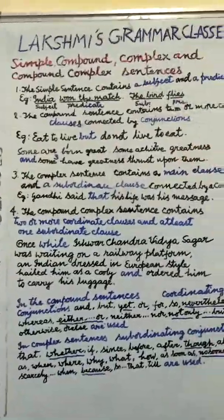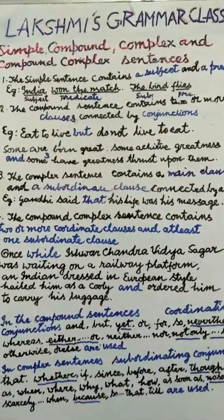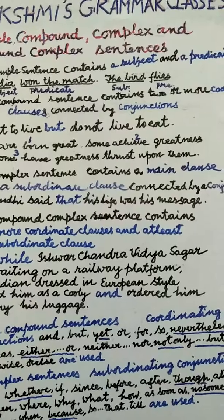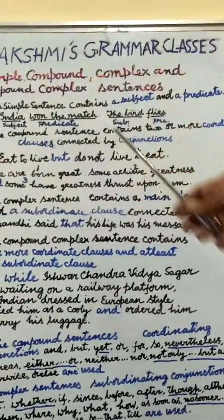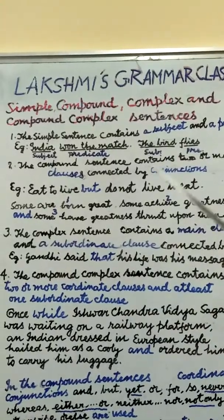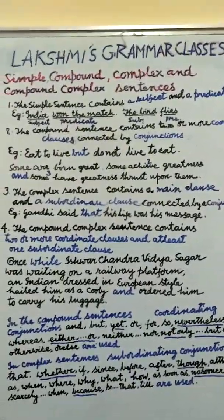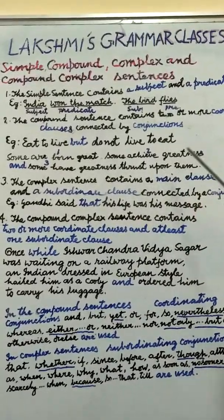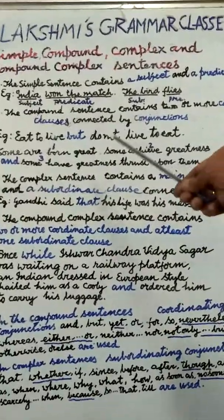The compound sentence contains two or more coordinate clauses — that is, clauses of equal rank — connected by conjunctions. Look at these examples. Two clauses: 'Eat to live, but do not live to eat.' Here, 'Eat to live' is one coordinate clause, and 'Do not live to eat' is another coordinate clause. These two clauses are connected by the conjunction 'but'.